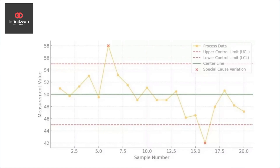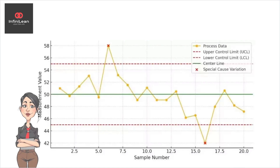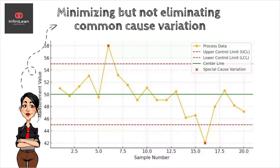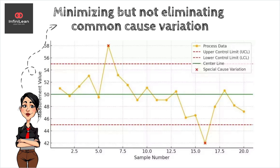In Six Sigma, we aim to minimize variation as much as possible. However, eliminating common cause variation is neither practical nor necessary. Instead, the focus is on reducing special cause variation and controlling common causes to a manageable level.